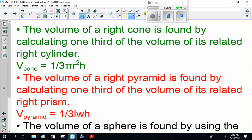The volume of a right cone is found by calculating one-third of the volume of its related right cylinder. Of its related. Now, this is something you talked about in grade 9. When you're getting to a cone or a pyramid, it's one-third of the space of the original object.